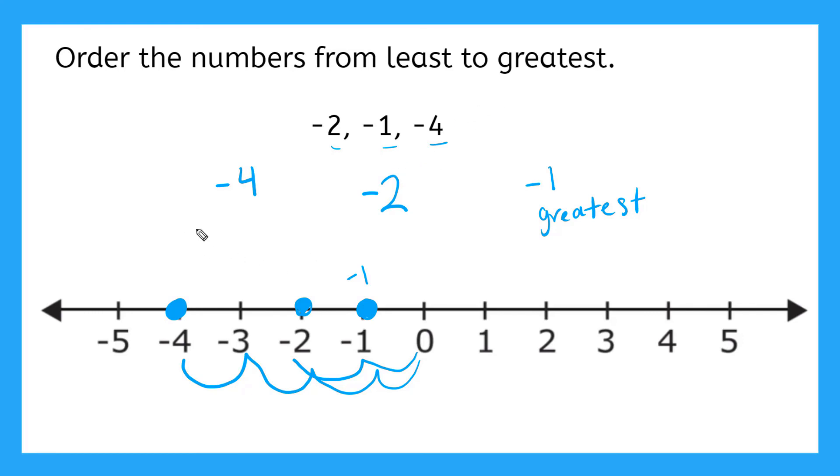So when we order these from least to greatest, we have negative four, negative two, and then negative one.